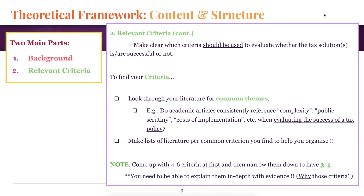You can come up with probably four to six criteria at first, and then narrow it down to maybe three to four. If after looking at a few articles you notice maybe six common themes, you can decide which of those themes you find personally interesting, think you could elaborate on, or just have a lot of evidence and are very commonly occurring across articles. Those are the ones that are going to be really good for your essay, because you need to be able to explain these criteria in depth with evidence — why those criteria matter when analyzing whether or not a tax policy would be successful.